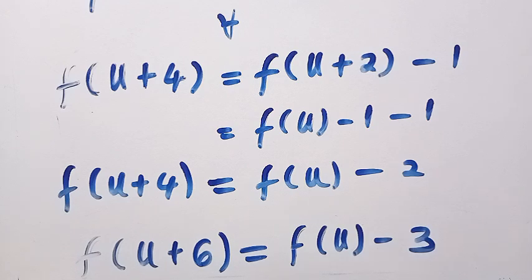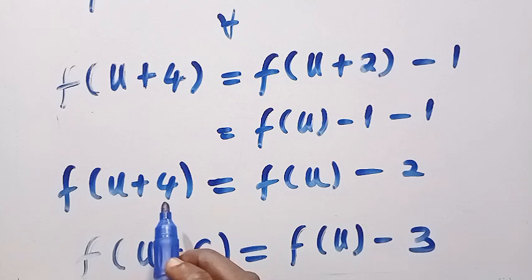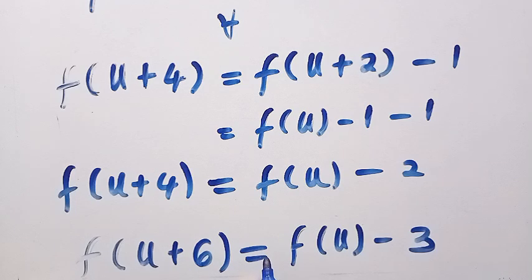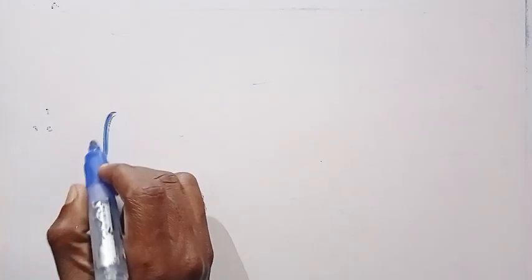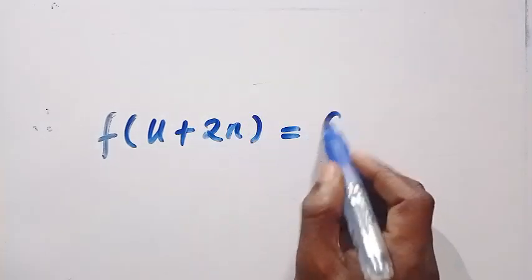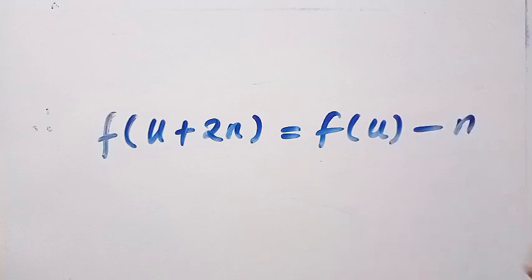So we can make a general conclusion. Since every number here we are increasing is 2, you can just assume it to be f(u+2n) equals f(u) minus n. We can also test for f(u+8) to see that the pattern still continues. So this implies that for every f(u+2n), this equals f(u) minus n, where n is a member of positive integers.